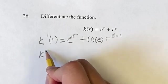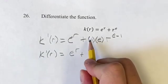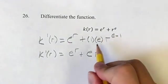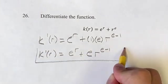Now we just have to simplify this. K prime of r is equal to e to the r, still staying the same, plus 1 times e is e, times r to the e minus 1. There's no way to simplify that, just leave it as it is, and that's going to be your final answer.